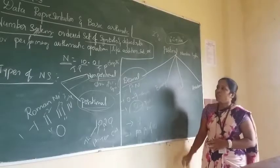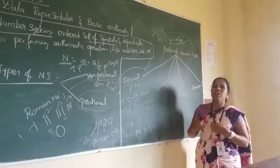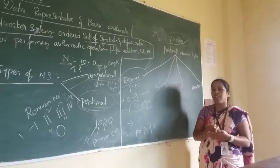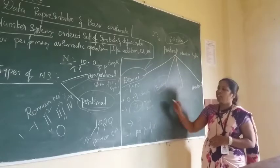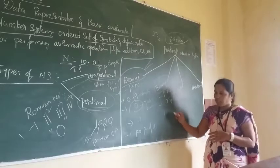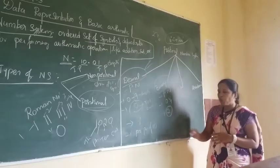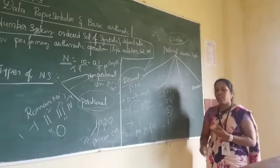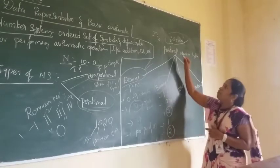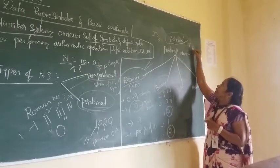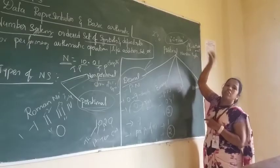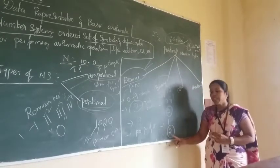The decimal number system is the common number system we use in regular life. The binary number system is used by digital computers, which store data in the form of 0s and 1s. It is a positional number system that includes only the symbols 0 and 1. The base or radix is 2, and the maximum digit value is 1. The value is calculated using positive powers of 2. For example, binary 101 = 1×2² + 0×2¹ + 1×2⁰.